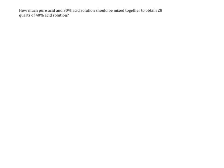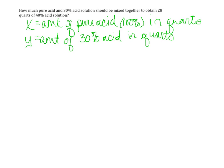I have defined my variables as x being the amount of pure acid, and remember pure acid would be 100% acid in quarts, and y is the amount of 30% acid also in quarts.